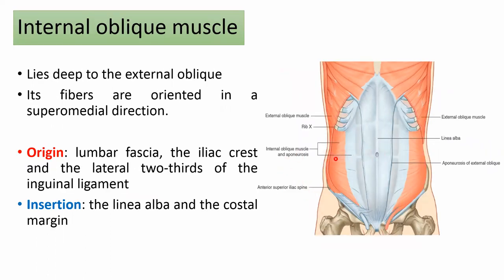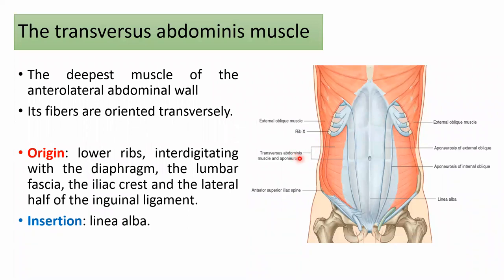The internal oblique lies deep to the external oblique; its fibers are oriented superomedially. It originates from the lumbar fascia, iliac crest, and lateral two-thirds of the inguinal ligament, and inserts into the linea alba and costal margins. The transversus abdominis is the deepest muscle of the anterolateral abdominal wall; its fibers are oriented transversely, originating from the lower ribs interdigitating with the diaphragm, the lumbar fascia, iliac crest, and lateral half of the inguinal ligament, inserting into the linea alba.